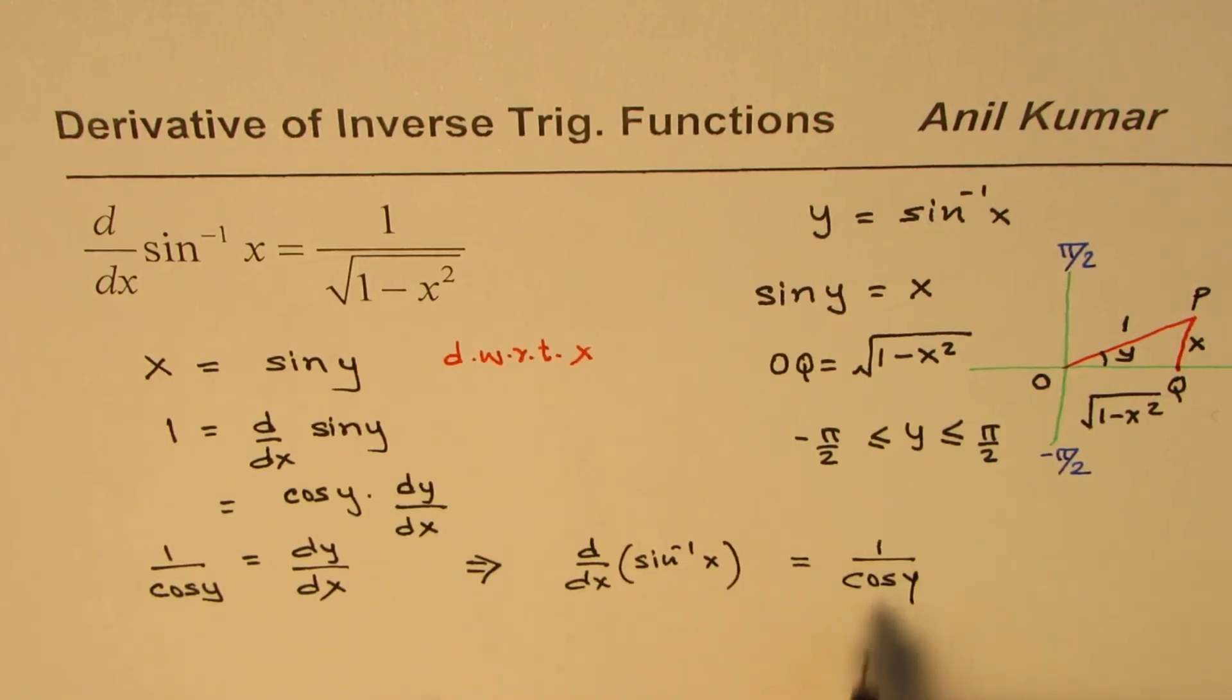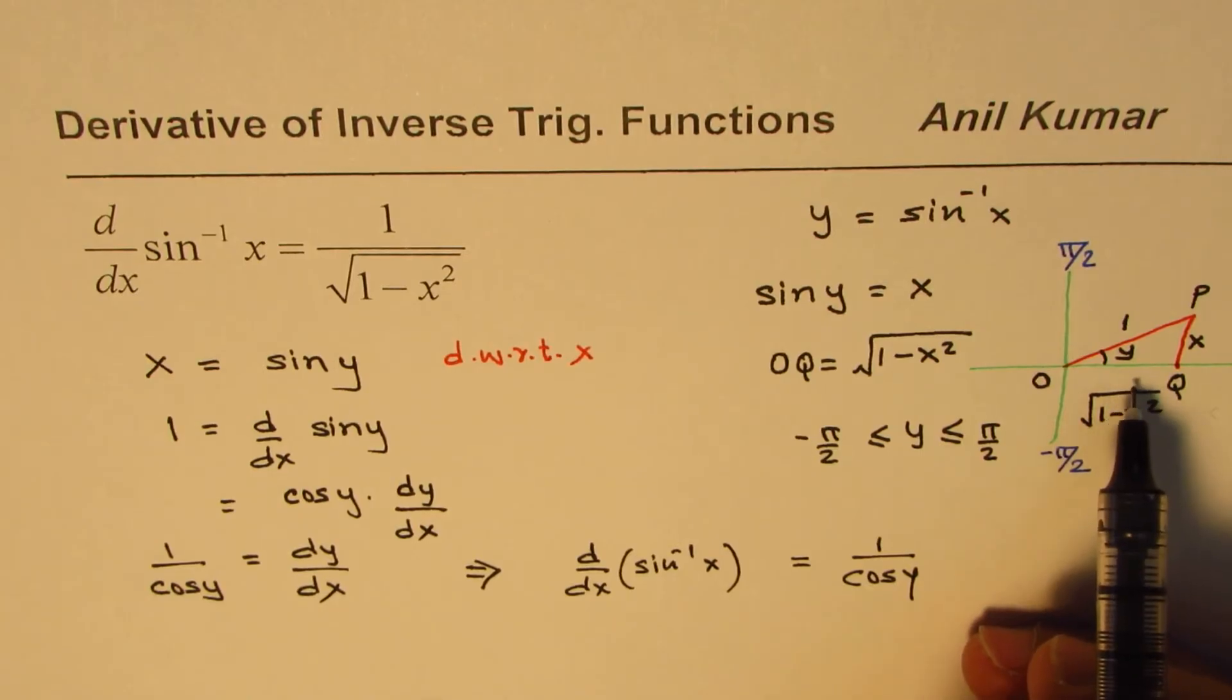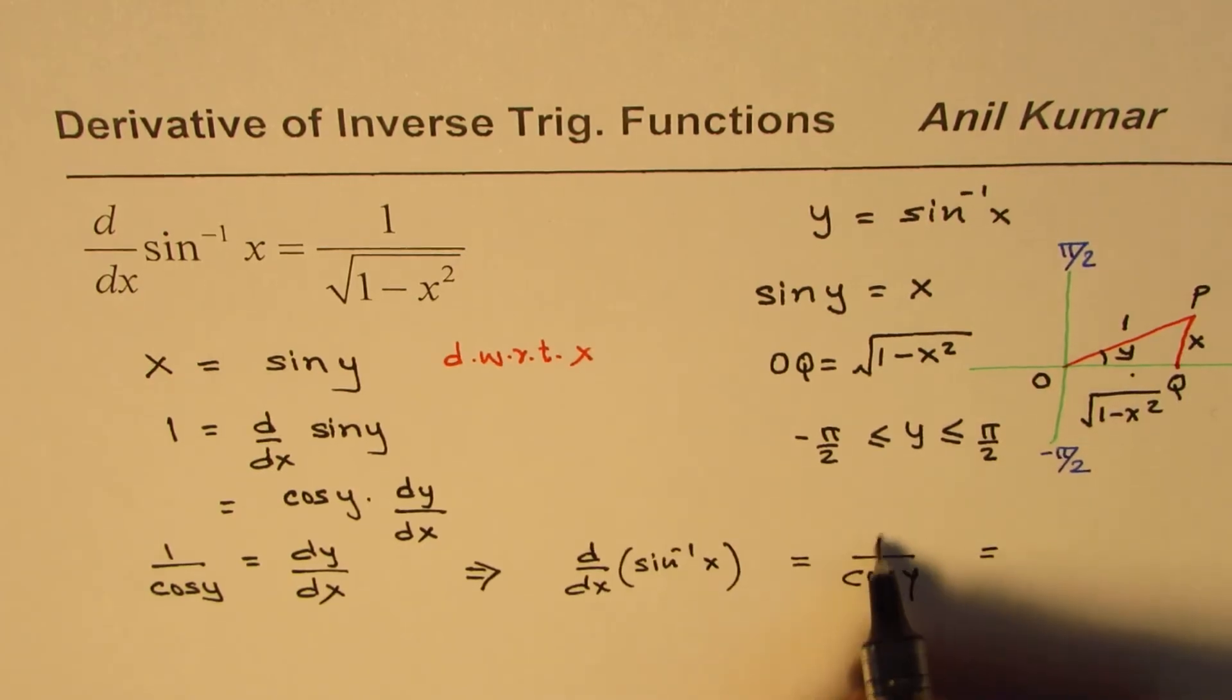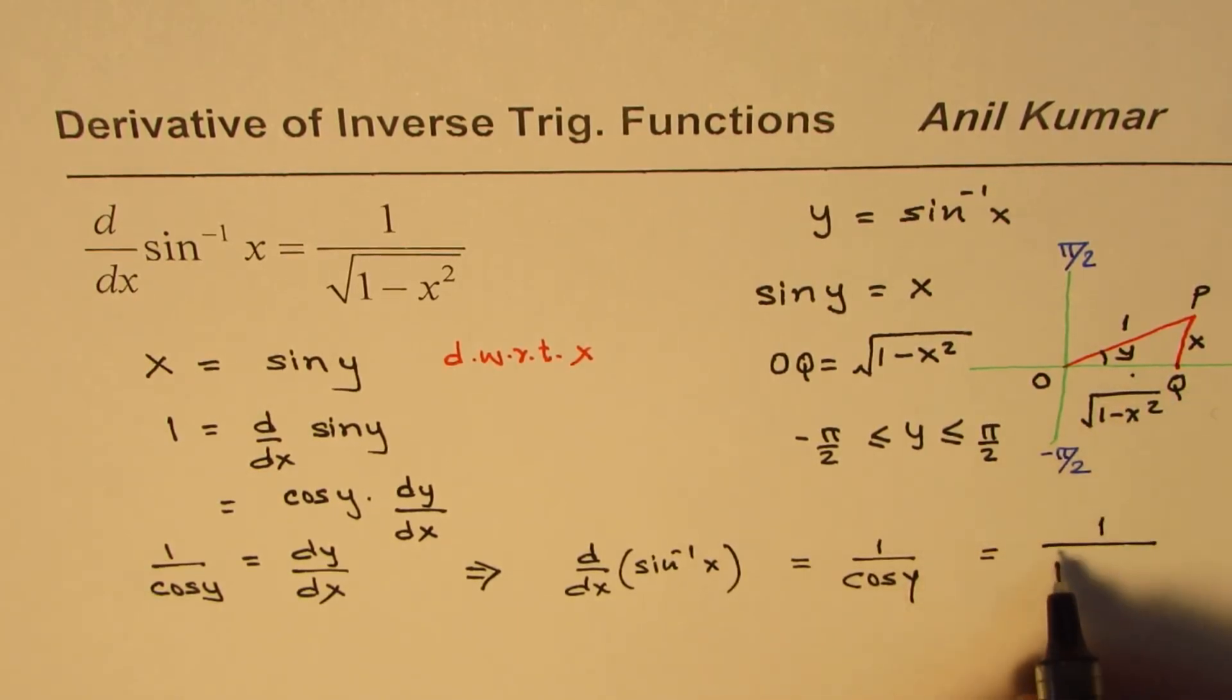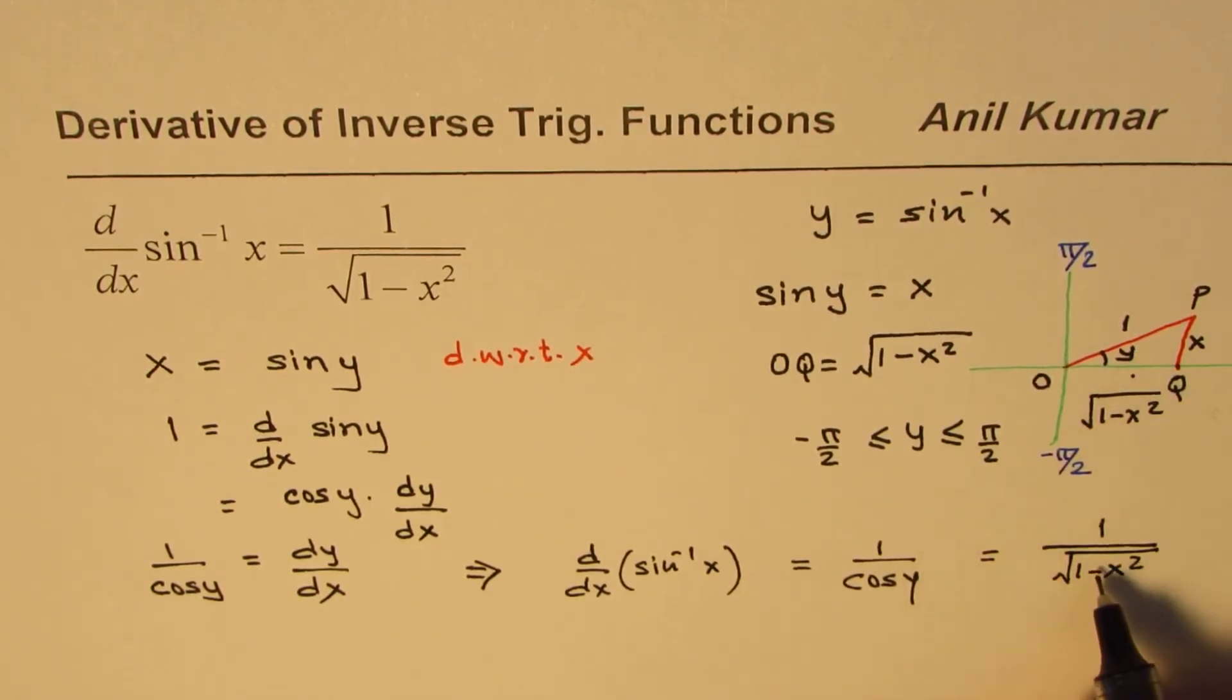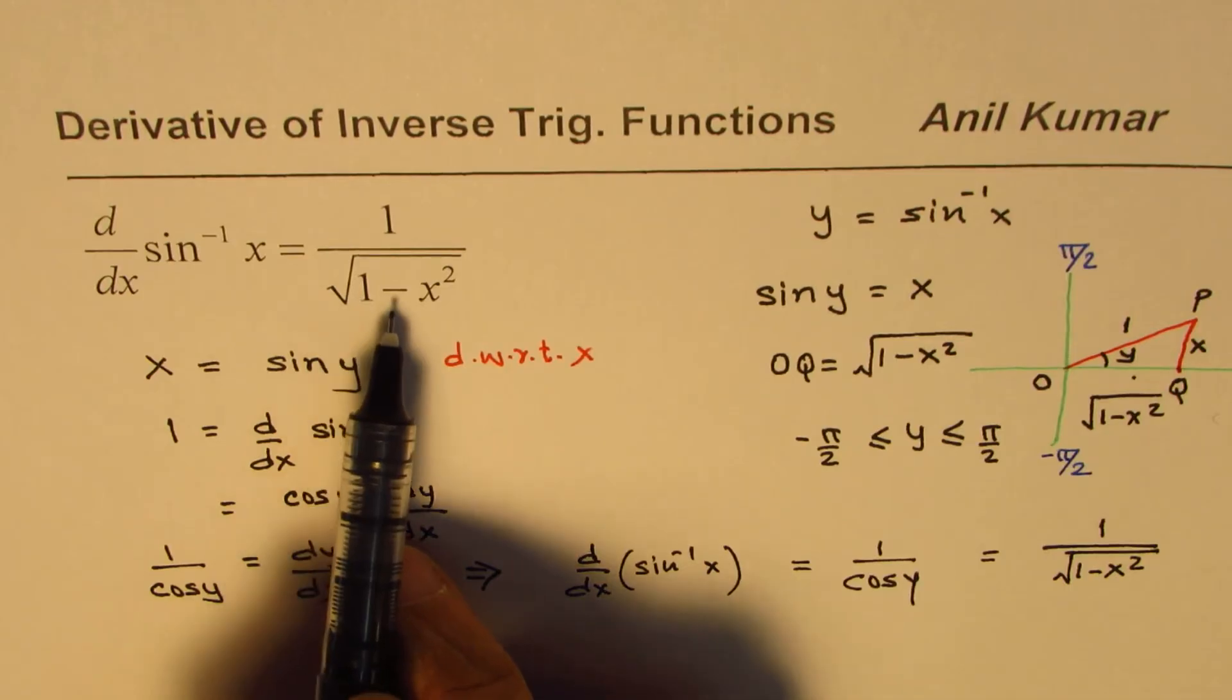Now, 1 over cos y. What is cos y? If you look at this diagram, you will find that cos y is the ratio of adjacent side to hypotenuse. So 1 over cos y will be 1 over, that comes here, ratio of hypotenuse, this adjacent side, which is 1 minus x squared. So from this triangle, straight away, you can get this. So the derivative of this particular function is 1 over 1 minus x squared.